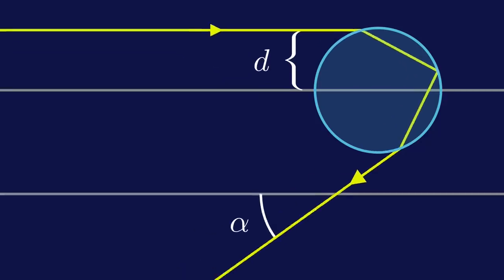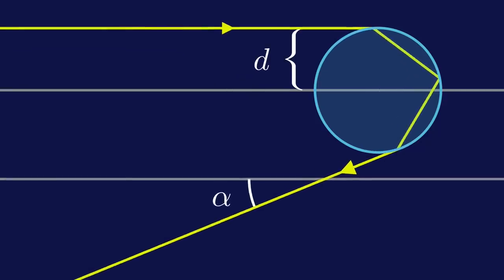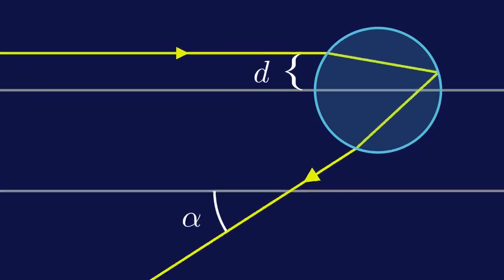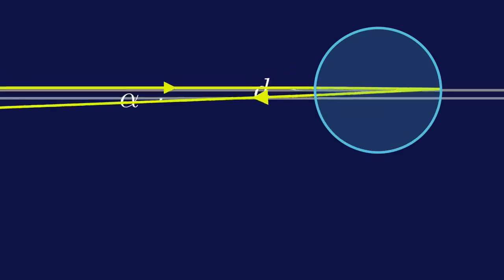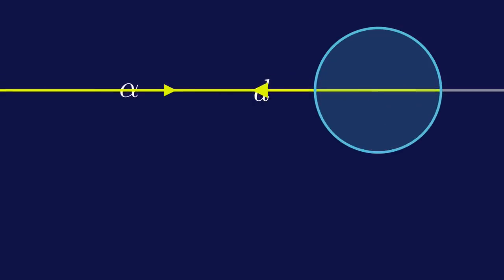In hindsight, this shouldn't be surprising. The angle certainly can't always be 42 degrees, because if the ray hits the droplet perfectly in the center, it will reflect back exactly the way it came.